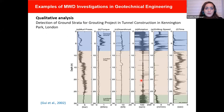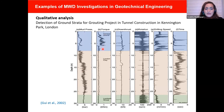Gui et al. in 2002 used MWD for the detection of ground strata for a grouting project in tunnel construction in Kennington Park in London. Using rotary drilling in a hydraulic driven drill rig, they measured drilling parameters every 5 mm using an instrumented device. The interesting finding was that even looking at raw data with all the noise, they found that mud pressure noise and average value in the gravel layer was less than in the clay layer, indicating the bit was clogged in the clay. For torque, the average value and noise in the gravel layer was higher than in clay, showing that particles jammed the drill bit and more torque was needed. In general, even by looking at noise in the data, they were able to differentiate between soil layers in the subsurface.